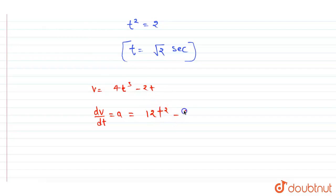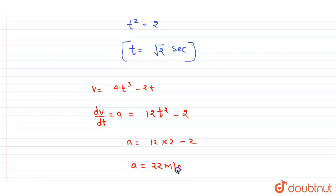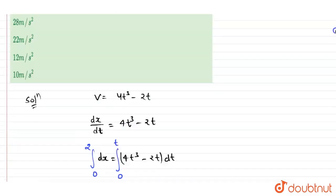Now substituting t equals √2: t² becomes 2, so acceleration equals 12 times 2 minus 2, which is 24 minus 2 equals 22 meters per second squared. So the answer to this question is 22 m/s².